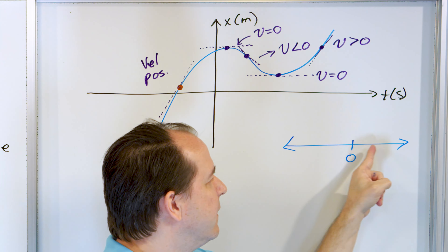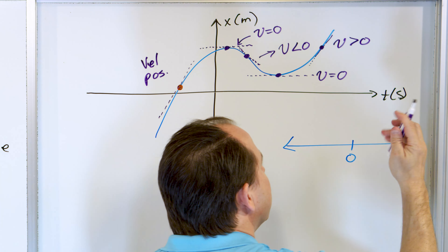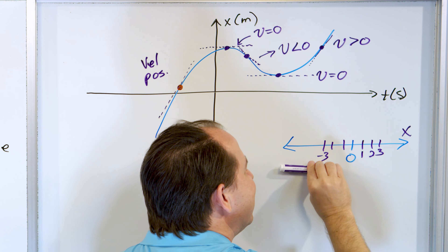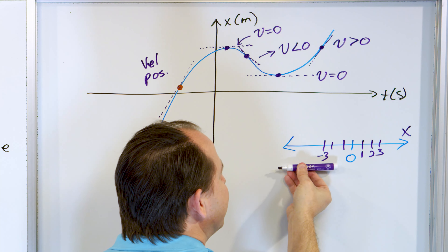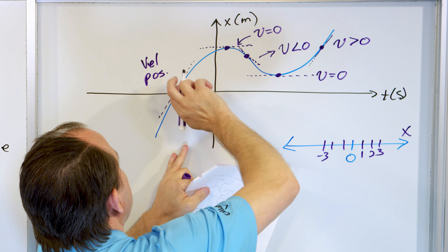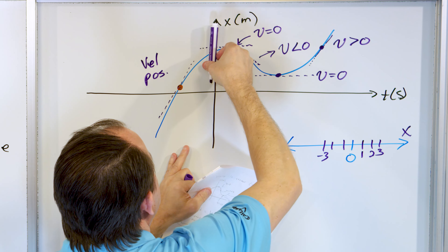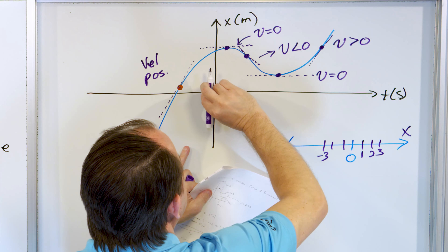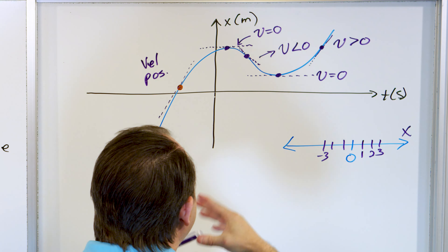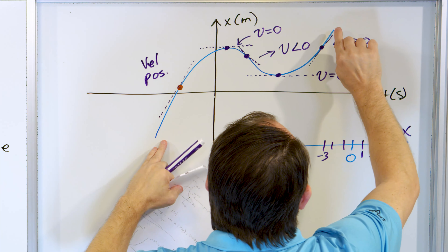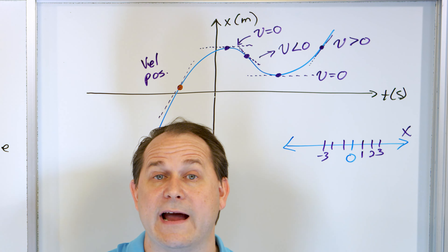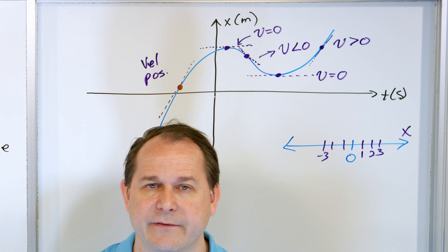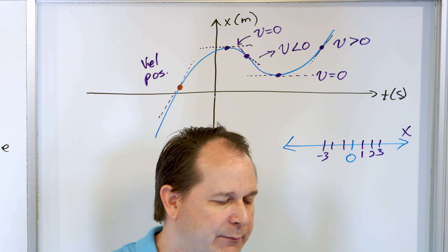When I have a positive velocity, I'm moving in the positive x direction. A negative velocity means I'm moving towards the negative direction. Here I'm traveling positive x — velocity positive. At the top, velocity is zero and I turn around. Traveling down, velocity is negative because I'm heading towards negative x. Then I turn around again — velocity zero for a moment — then moving positive again. At any point on this graph, if you can see what the slope is, you can tell if the velocity is positive, negative, or zero. The slope of the tangent line, which we also call the derivative, gives you the velocity everywhere.